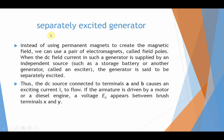There are a few types of DC generators, two of which are the most common. One is the separately excited generator, and the other is not separately excited, meaning it does not require an external DC source. In a separately excited generator, instead of using a permanent magnet to create the magnetic field, we use a pair of electromagnets called field poles. When the DC field current is supplied by an independent source such as a storage battery or another generator called an exciter, the generator is said to be a separately excited generator.